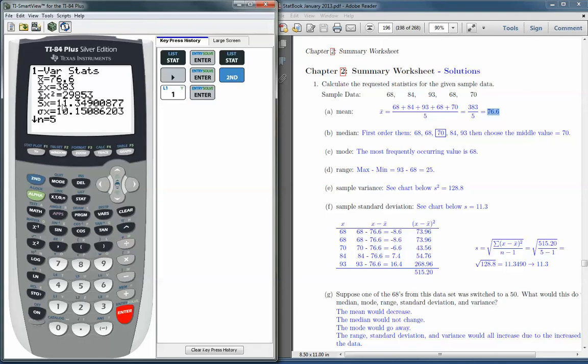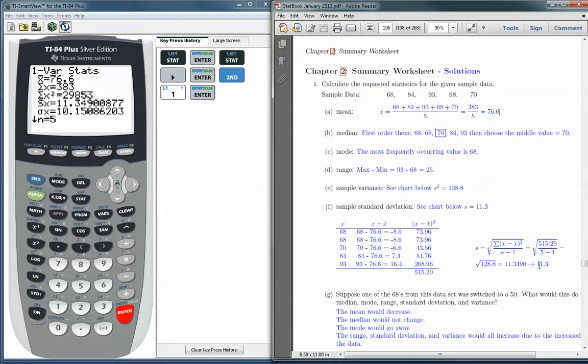And then we have two standard deviations. The first one, s with an x after it, is the sample standard deviation, and this is the one we will use most often. And it is what we calculated over here. We got 11.3, and the calculator gets 11.3.